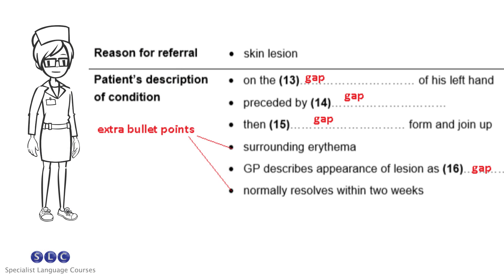Listening Part A is assessed through structured note completion. Bullet points are arranged under headings relating to the dialogue. There are 12 gaps in the bullet points which need to be completed. There are also some bullet points which do not contain gaps, which are added as scaffolding — that is, to hold the list together.